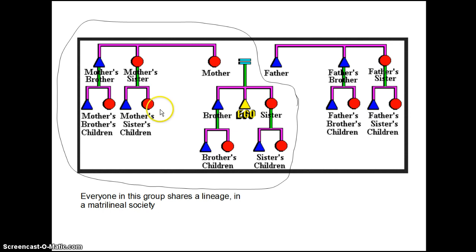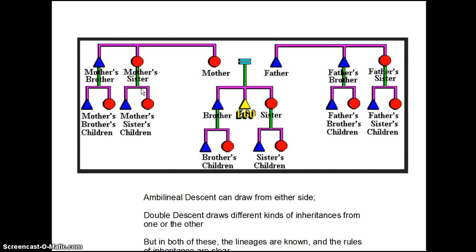One interesting thing is that kinship terms reflect these changes. In a patrilineage, oftentimes the father and the father's brother share the exact same kinship term — say, 'dad' — because the relationship you have to someone through the lineage is much more important than the plain biological fact of who actually sired you. Similarly, in a matrilineal system, it's often the case that your mother's brother is the most significant male in your life, because unlike your father, your mother's brother is in your lineage.